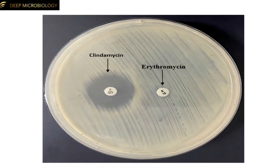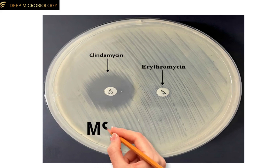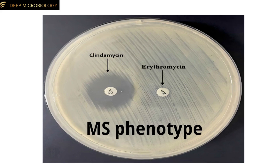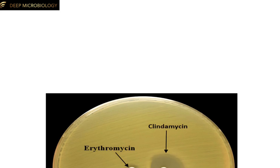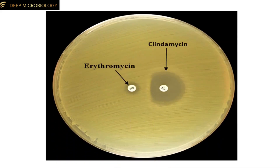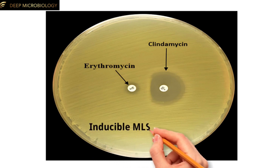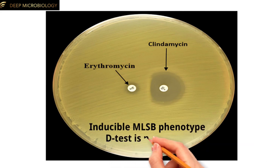If erythromycin is resistant and clindamycin gives a circular zone of inhibition, this is suggestive of the MS phenotype, which stands for macrolide-resistant and sensitive to lincosamides. This phenotype generally lacks the inducible resistance mechanism, for example the ERM gene, and often results from an efflux pump mechanism that specifically expels macrolides without affecting lincosamides. If erythromycin is resistant and clindamycin gives a D-shaped zone of inhibition with flattening towards erythromycin, this is suggestive of inducible MLSB phenotype — the D-Test is positive.